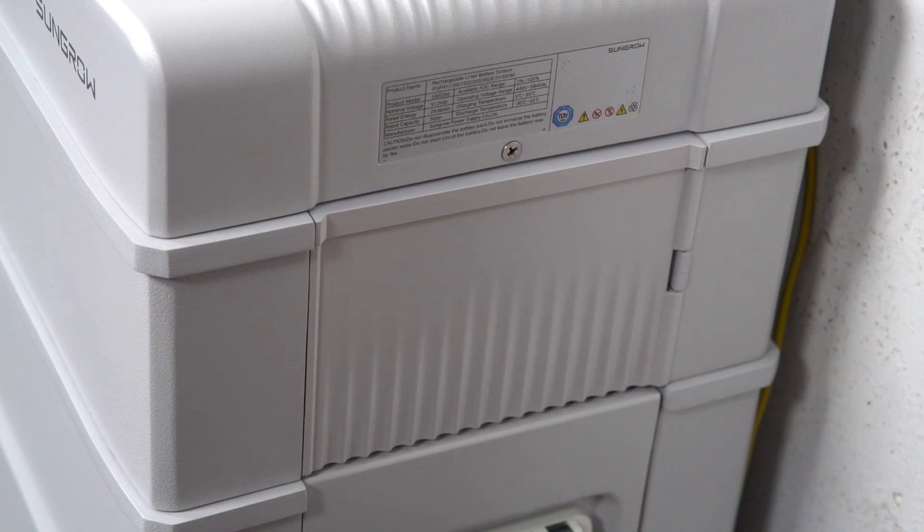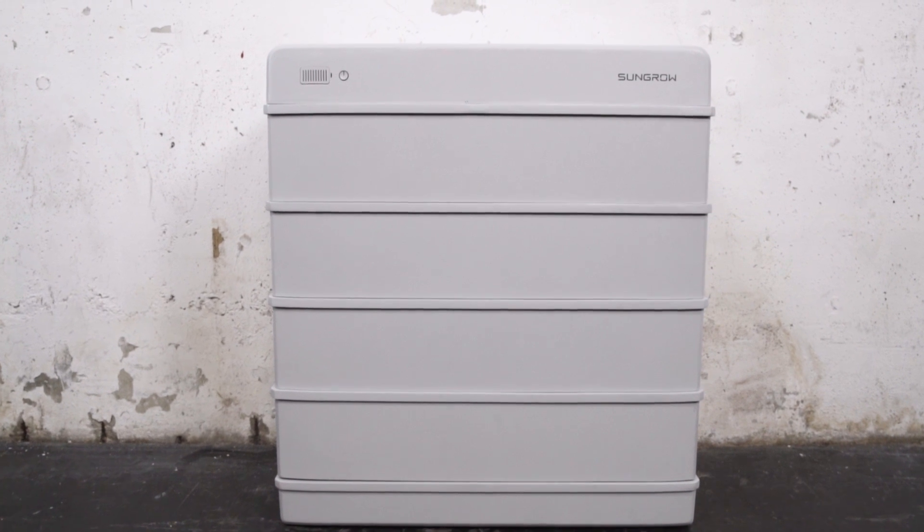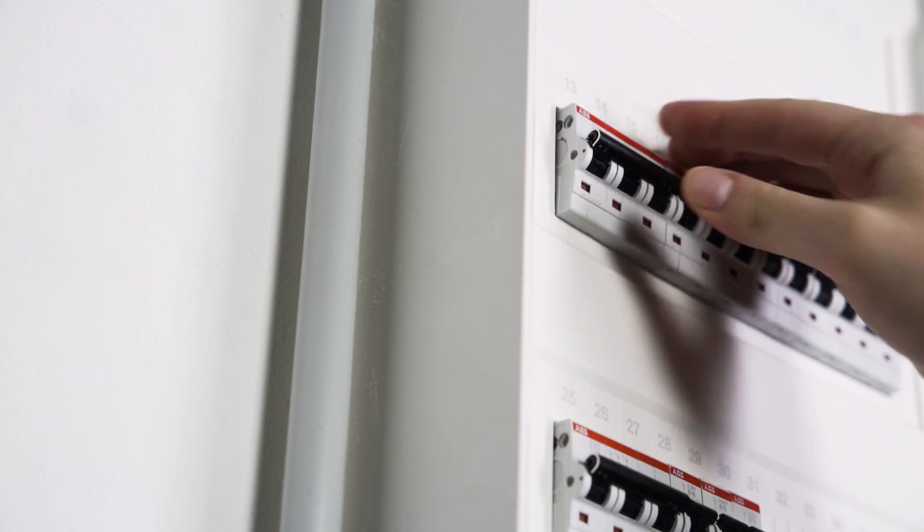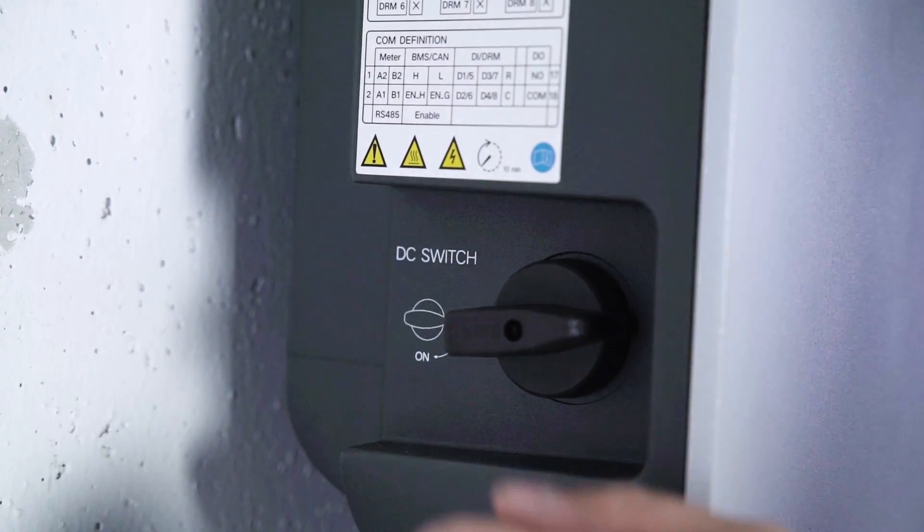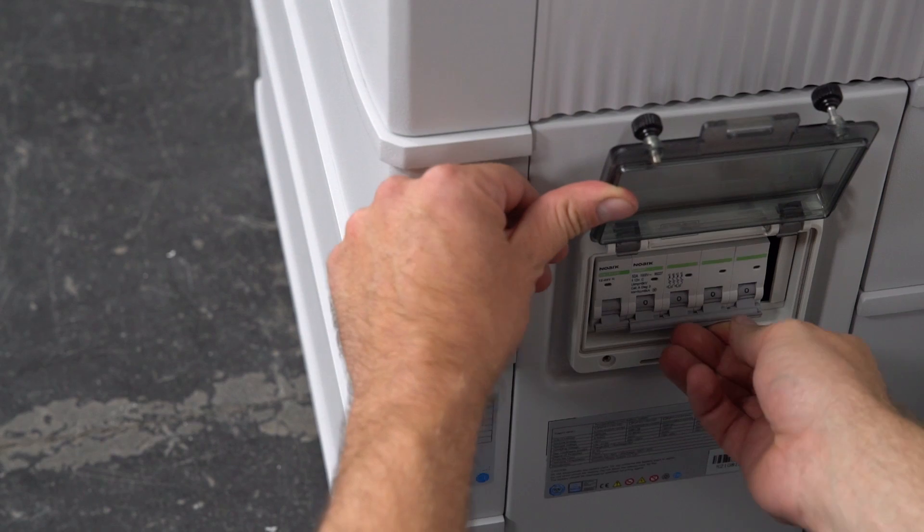Now it's time to start the system. First, switch on the AC circuit breaker, and second, the DC circuit breaker on the left side of the inverter and on the right side of the battery.